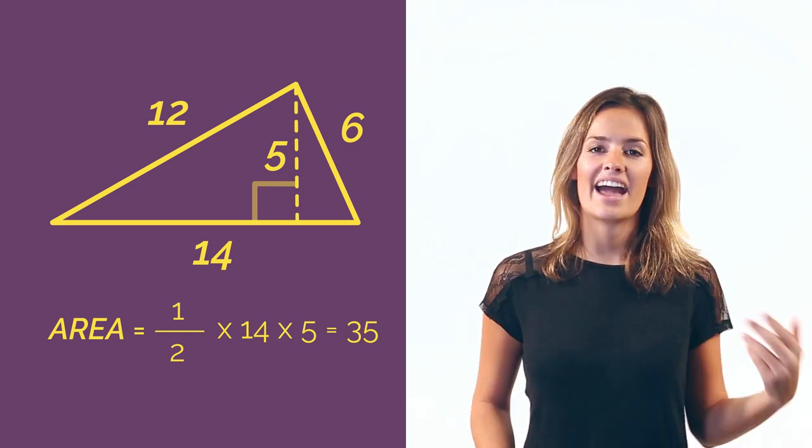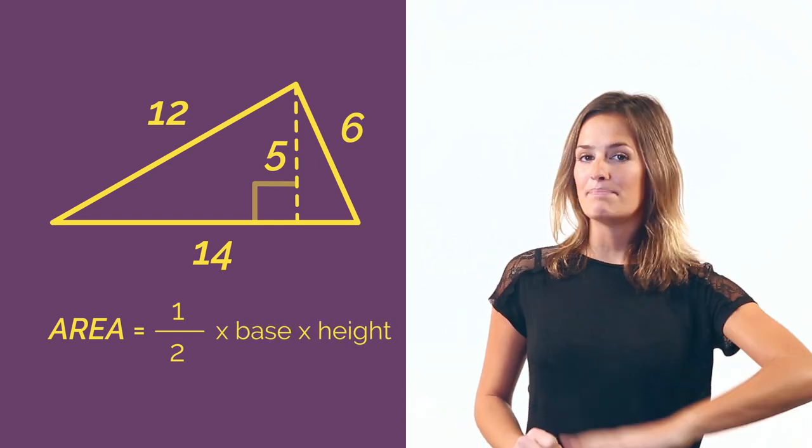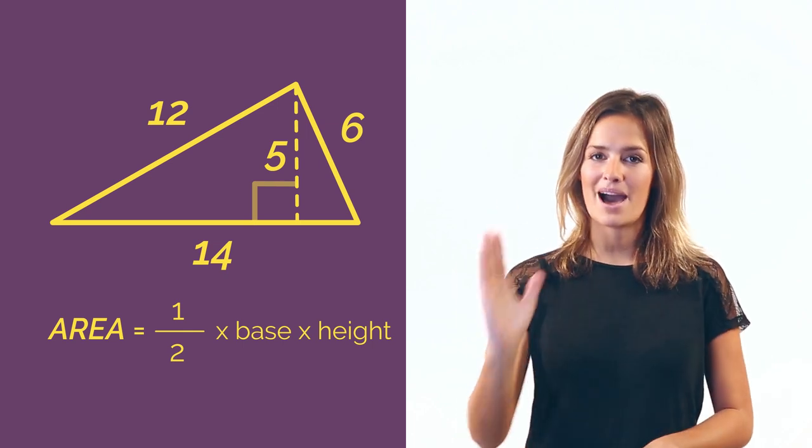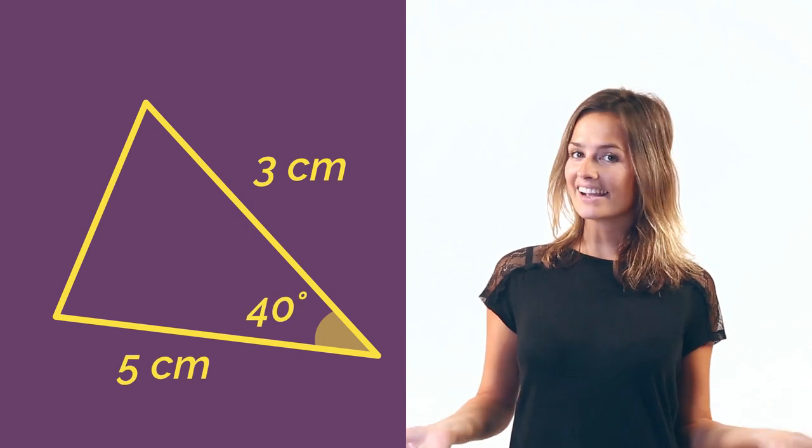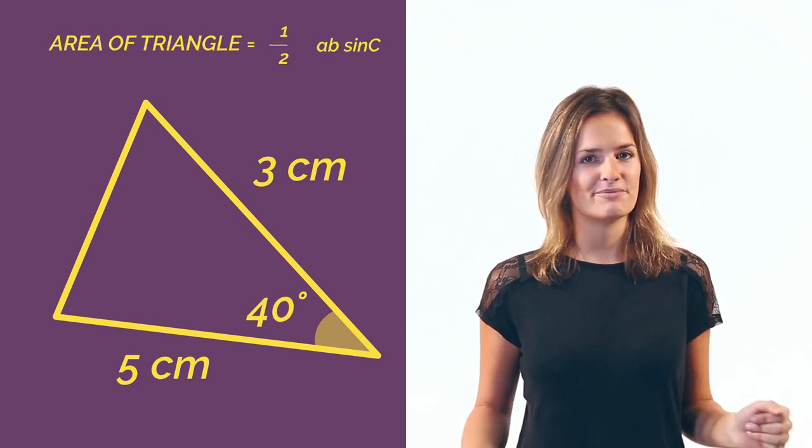You probably all know that the area of a triangle is the base multiplied by the perpendicular height. But what if we don't have the perpendicular height? Luckily we have a backup formula.